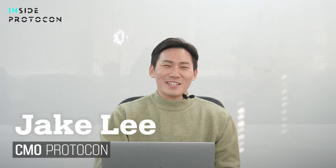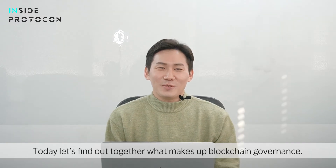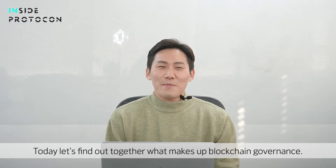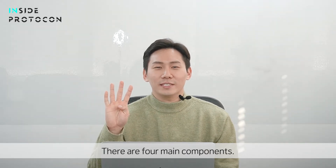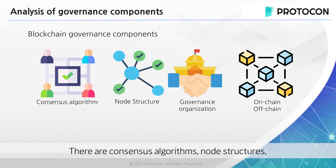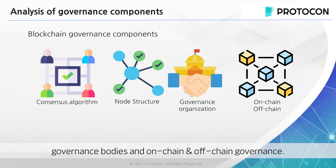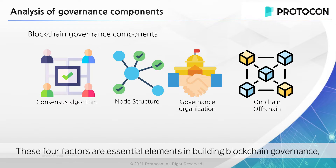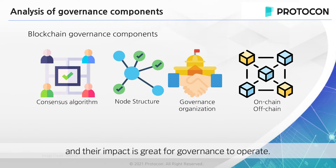Hello again, this is Jake. Today let's find out together what makes up blockchain governance. There are four main components: consensus algorithms, node structures, governance bodies, and on-chain and off-chain governance. These four factors are essential elements in building blockchain governance, and their impact is great for governance to operate.